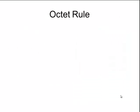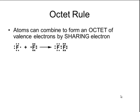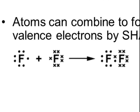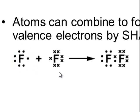When drawing structural formulas, the most important rule is the octet rule. Atoms can combine together to form an octet of valence electrons by sharing these electrons. For example, a fluorine molecule is made by combining together two fluorine atoms. Each fluorine atom is a member of the halogen group and will have seven valence electrons. We can then combine those together so that each fluorine actually has an octet of electrons around the outside.